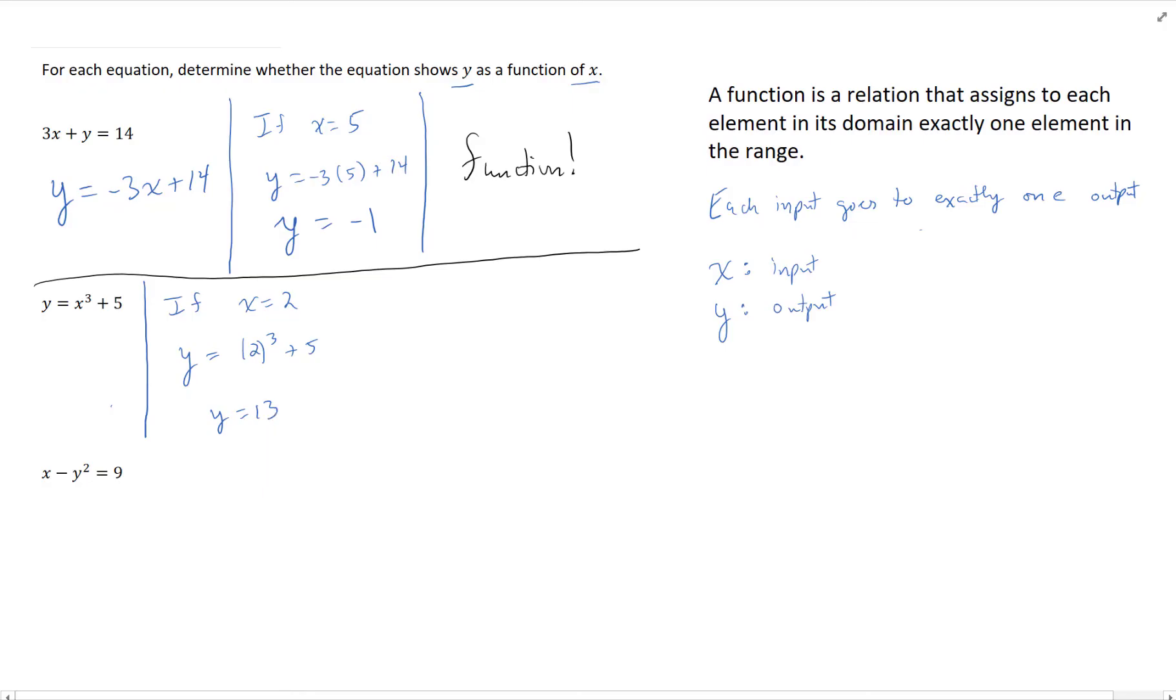There's no other possible value for y. That's the only possibility if x = 2. We could do something similar for different x values. This is a function because the input 2 has only one possible output, 13.